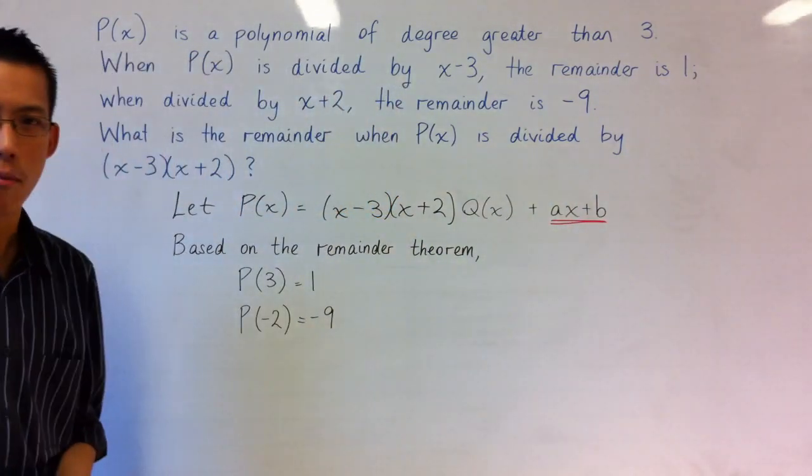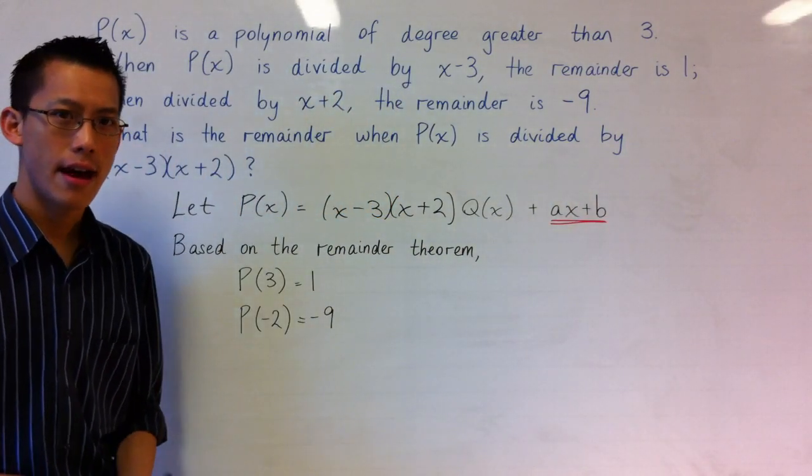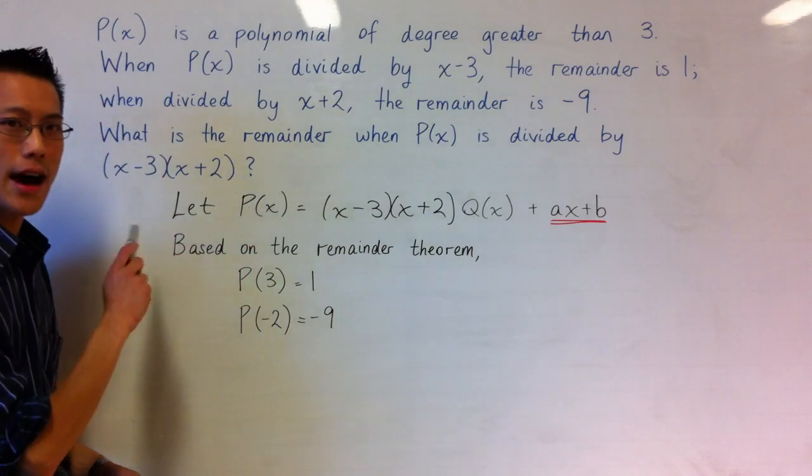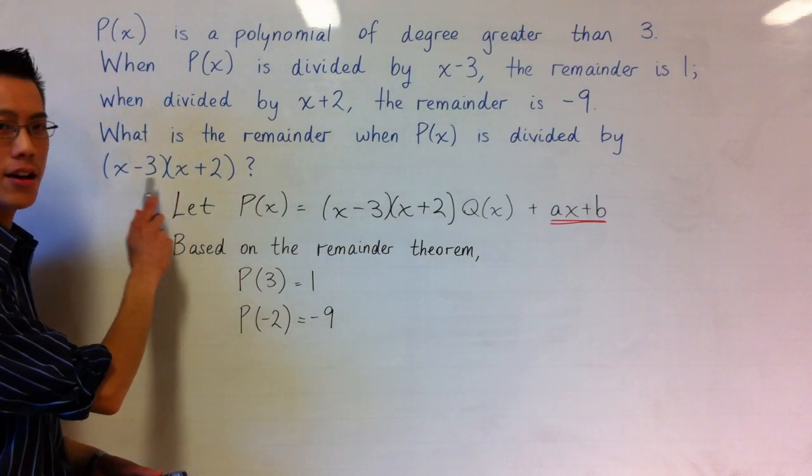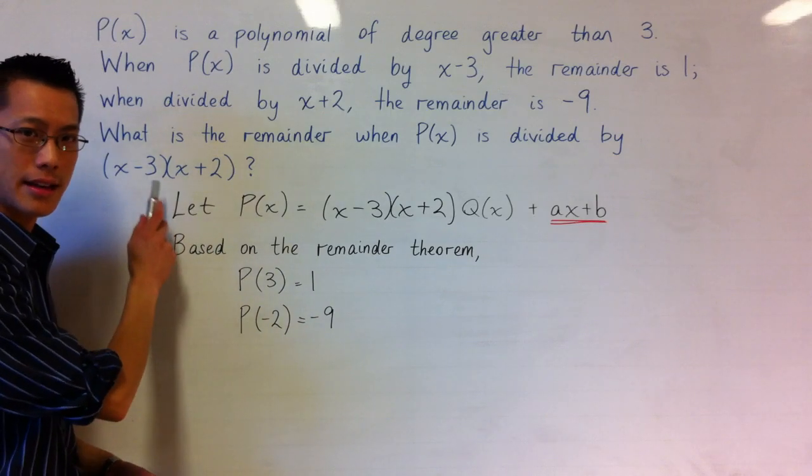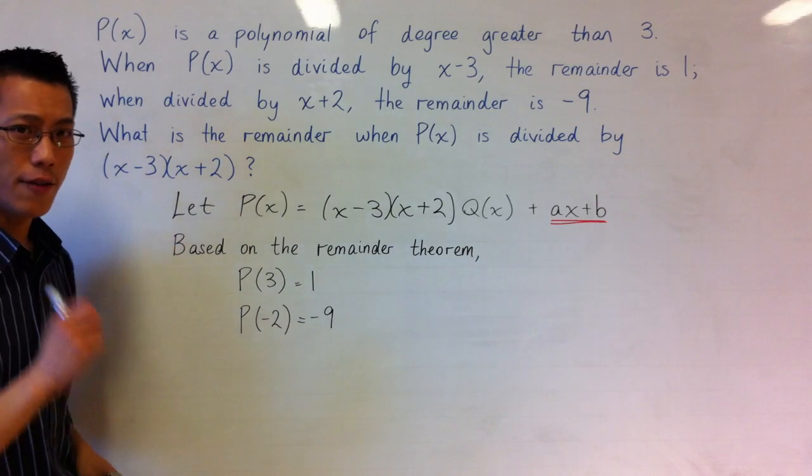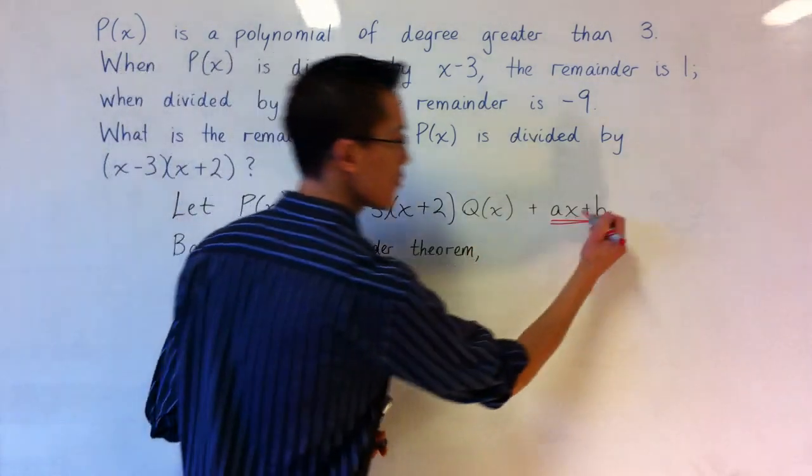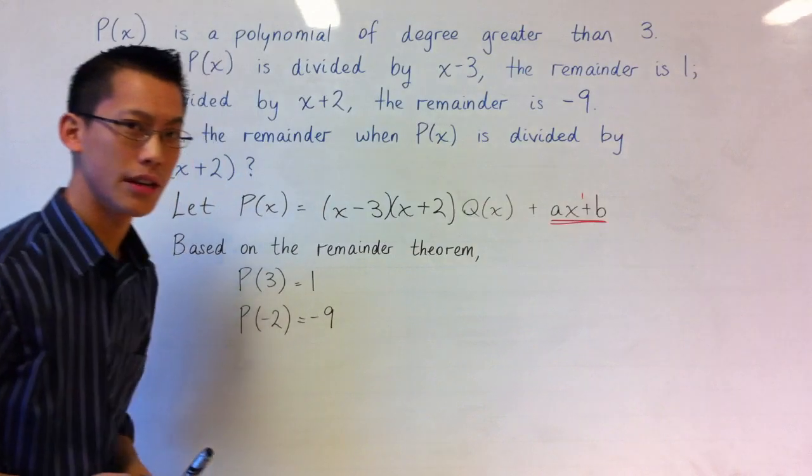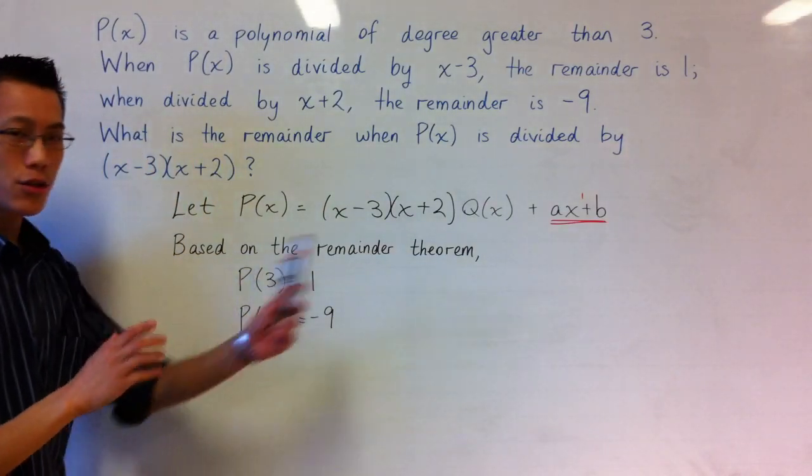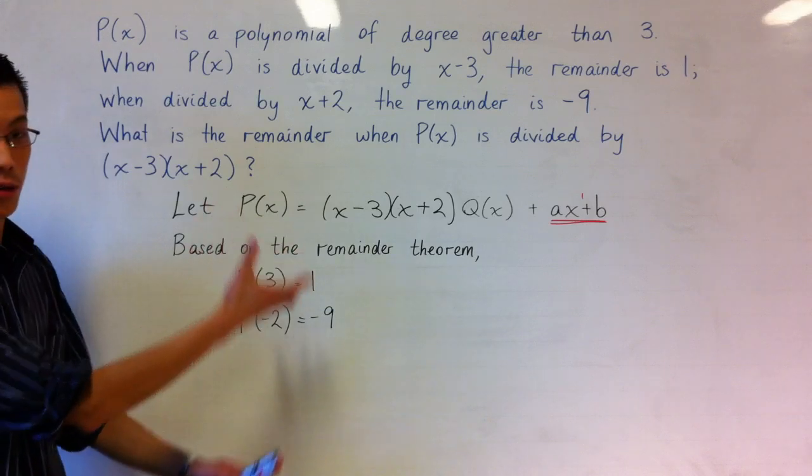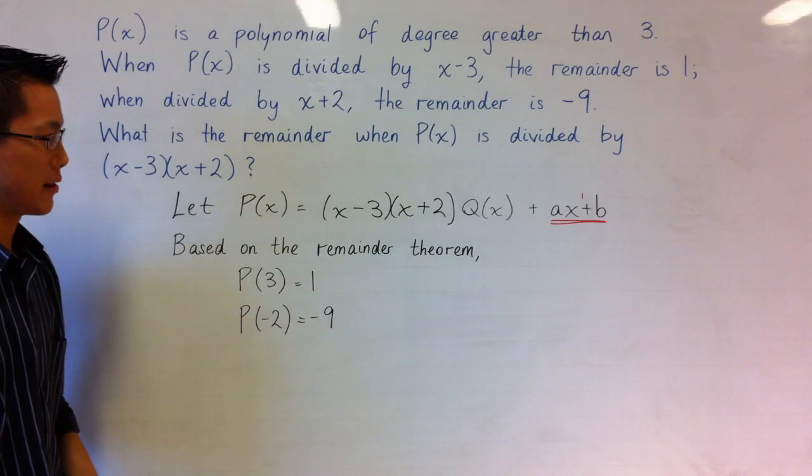Now this is a really important part. This is the actual remainder that we're trying to find and I'm just going to highlight the fact that since we're dividing by a polynomial of degree 2, that's our divisor there, therefore the remainder is going to be a polynomial of degree 1. But that's a really important step and if you don't understand why that is then this whole series of processes won't make sense.